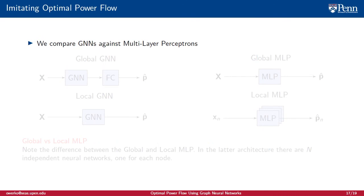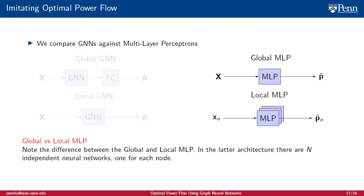To evaluate the performance of GNNs, we compare their performance against multi-layer perceptrons. We use two GNN architectures. The global GNN is a multi-layer GNN followed by a single fully connected layer. The local GNN is a simple multi-layer GNN. Similarly, we use two MLP architectures. The global MLP is a regular MLP. The local MLP is composed of N separate MLPs. Each takes in the 1 by 4 state vector of the nth node and outputs the power to be produced at that node.